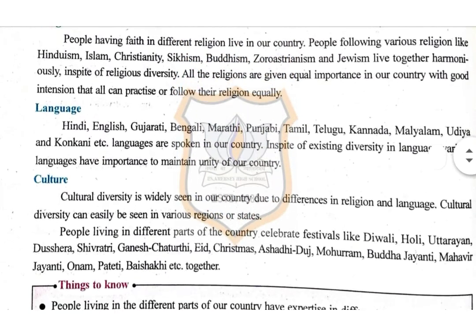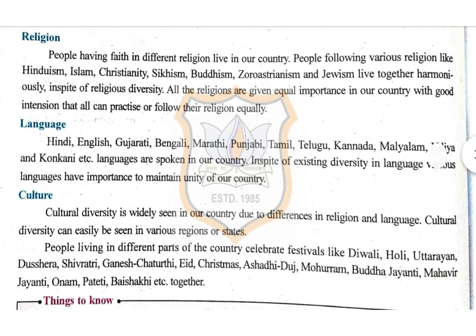Next is religion. People having faith in different religions live in our country. People following various religions like Hinduism, Islam, Christianity, Sikhism, Buddhism, Zoroastrianism and Jainism live together harmoniously in spite of religious diversities. All the religions are given equal importance in our country with good intention that all can practice or follow their religion equally.